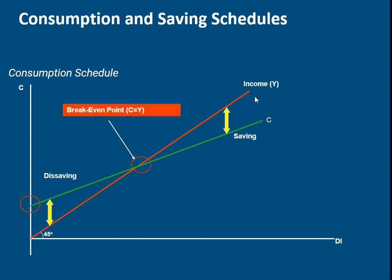The slope of the consumption function is MPC — marginal propensity to consume. MPC shows how much change occurs in consumption when there is a one-unit change in income.